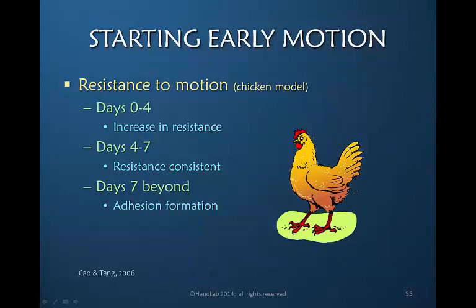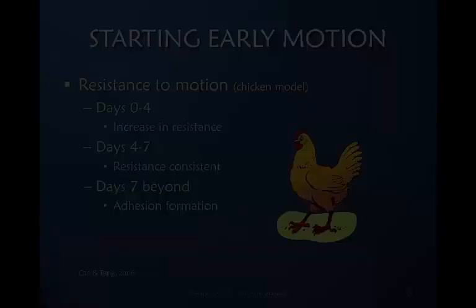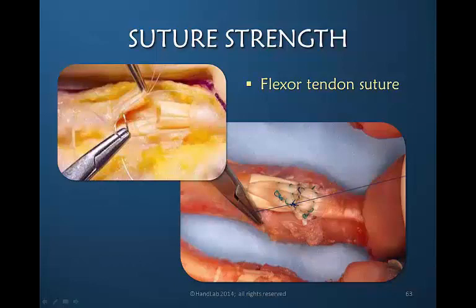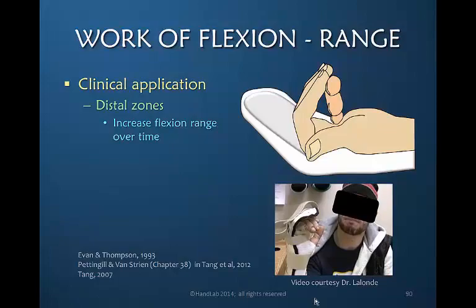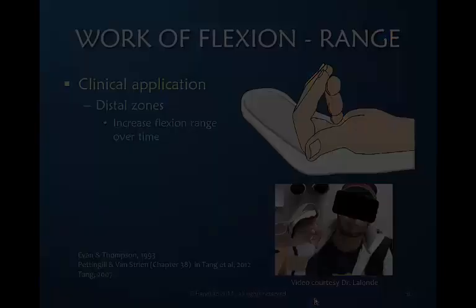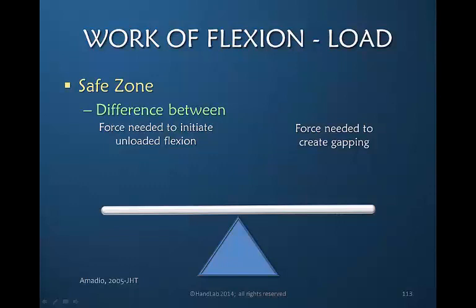Between days four and seven, that level of resistance remains consistent. This is a cadaver example of a surgeon placing both a core and a peripheral suture. A video courtesy of Dr. Lalonde shows a patient actively flexing through a limited range.